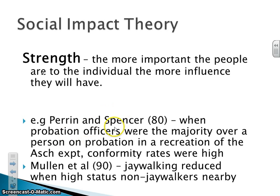Regarding strength, two studies support this. Perrin and Spence in 1980 and Mullin in 1990 found that jaywalking reduced when high-status non-jaywalkers were nearby — someone you really wanted to be like. In Perrin and Spence, they used probation officers versus those trying to get probation, who wanted to look good. In Mullin, similarly, someone you look up to or want to be like was seen crossing the street in a certain way, and it changed your behaviour. Their strength impacts on you.